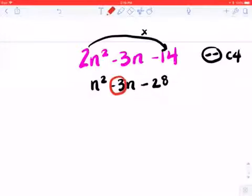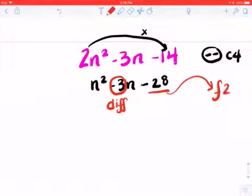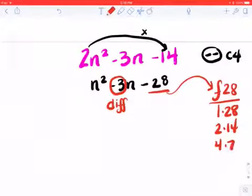If it is case four, I'm going to need a difference of negative one. And I'm going to factor twenty-eight. So one in twenty-eight, two in fourteen, and four in seven.